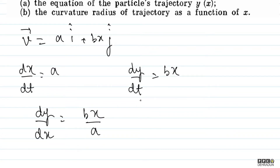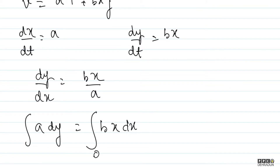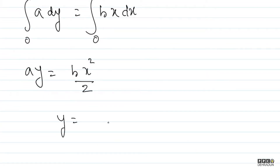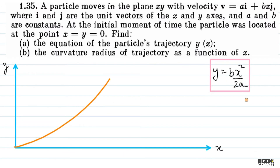Integrating, we have a dy = bx dx. Given that at x = 0, y = 0, integrating gives a·y = bx²/2. So the equation of trajectory is y = bx²/(2a).